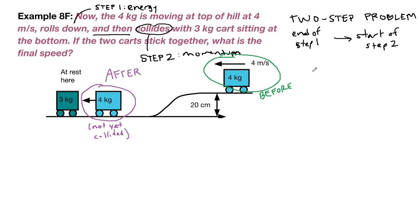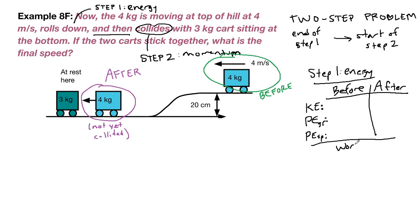So in this case step 1 is the energy problem. We have before and after in our little chart. The reason we make the chart is to keep everything organized to help train our brain that we are asking all these questions. So we are asking about kinetic energy, potential energy from gravity, looking for springs, and then for work as well.